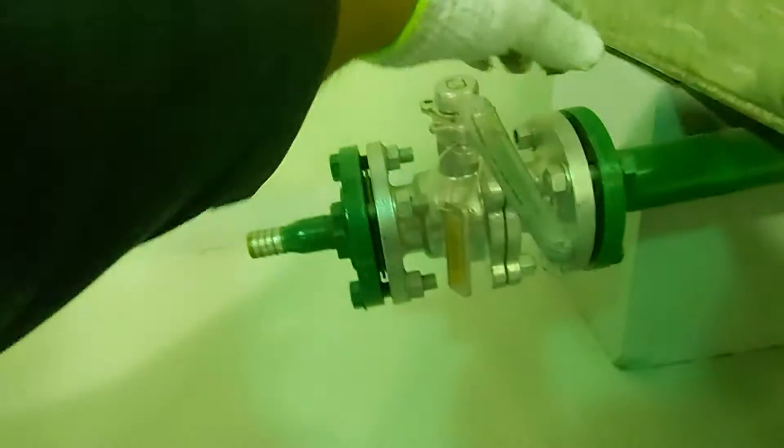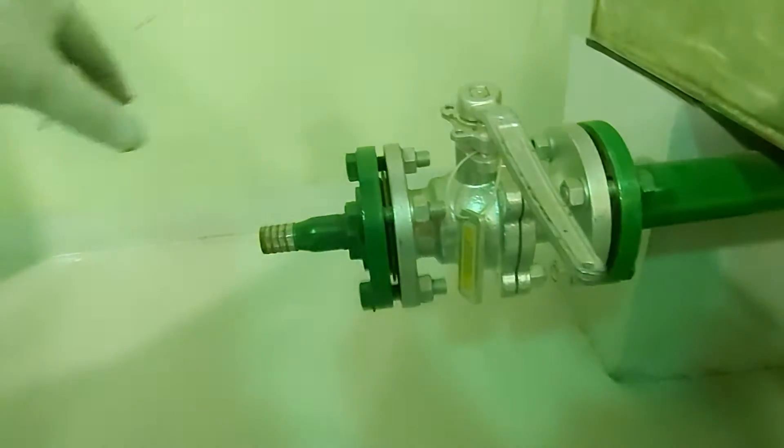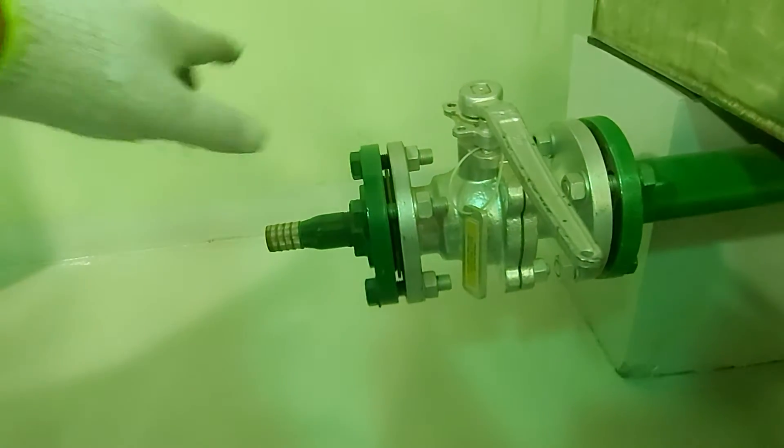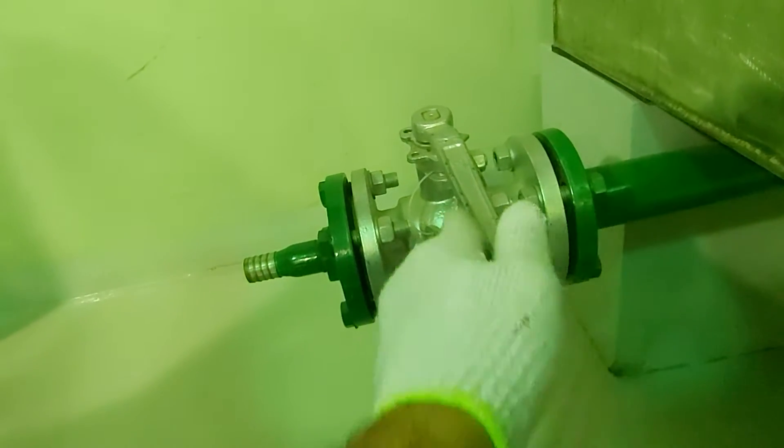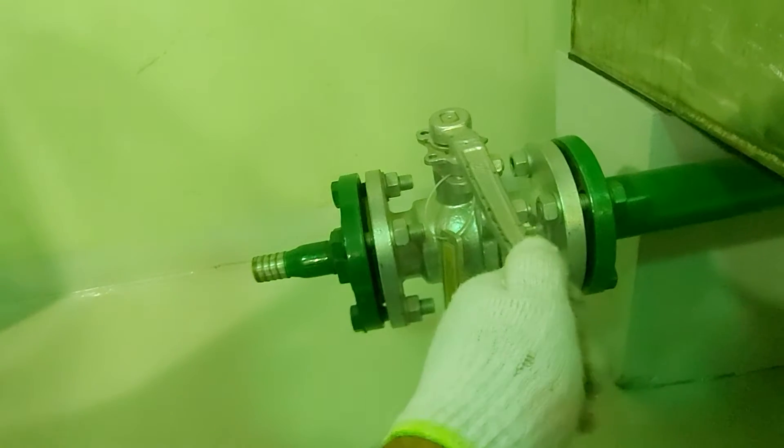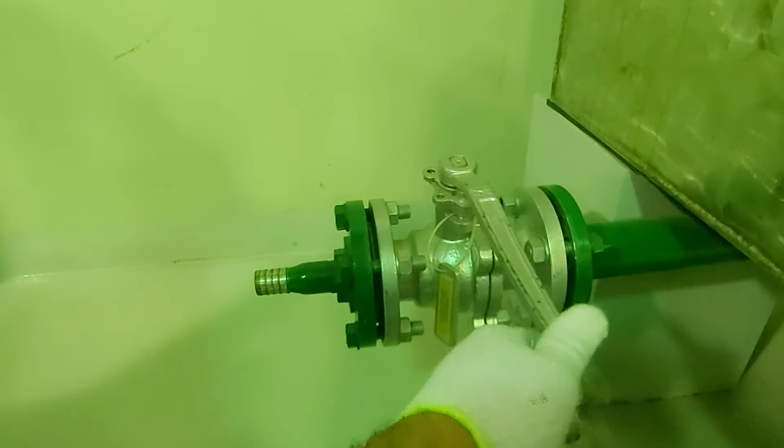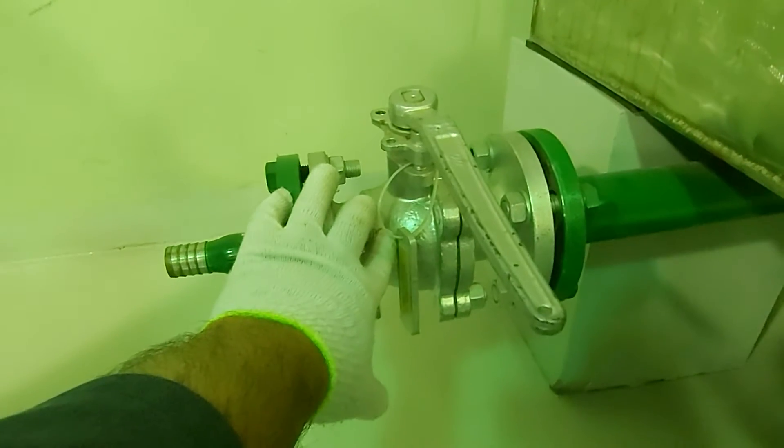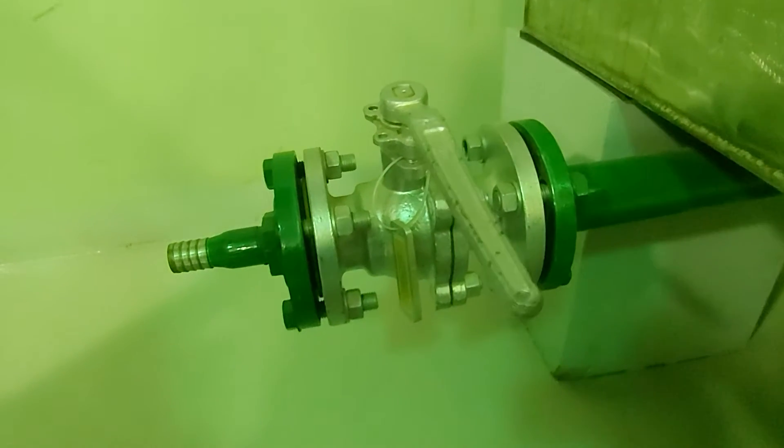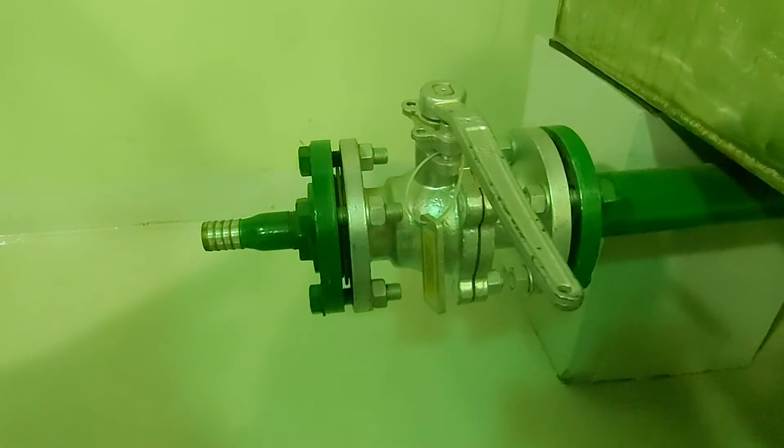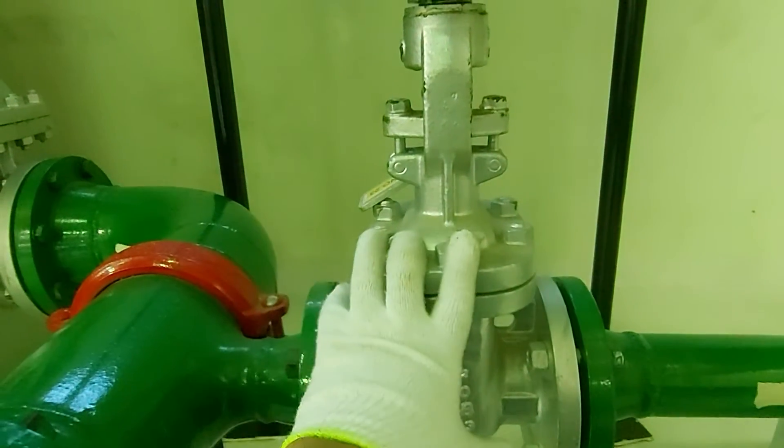So when the lever is in line with the pipeline, that means the valve is open. When the lever is 90 degrees out, away from the pipeline, that means the valve is closed. So this is the ball valve, used for fully open and fully closed. Now this is gate valve.